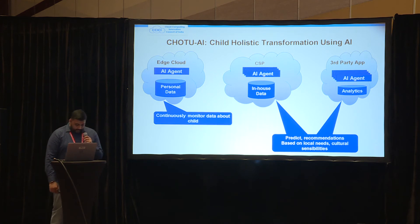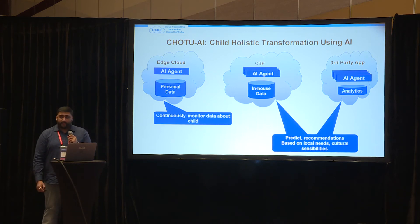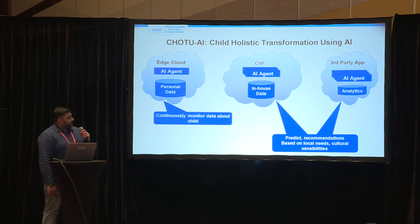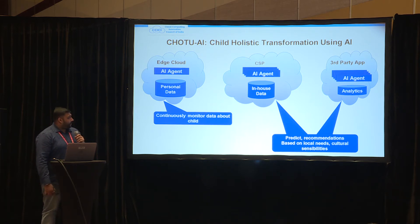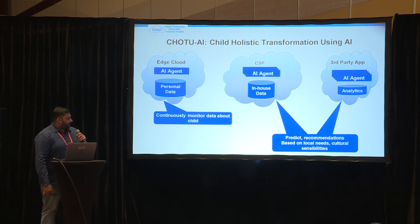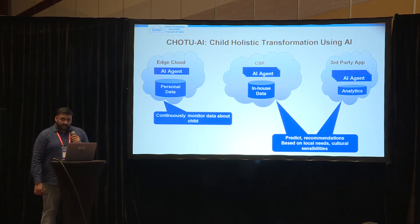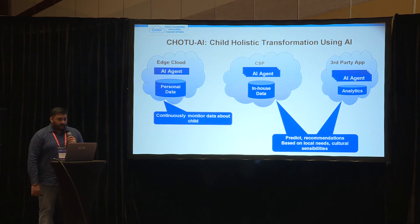The next use case is termed Chotu AI — Child Holistic Transformation Using Artificial Intelligence. As seen in the flow, we have defined an edge cloud where third parties do prediction and recommendation based on local needs and cultural sensibilities. We continuously collect data about children and store it in the cloud using security, PKI, or distributed ledger technologies.